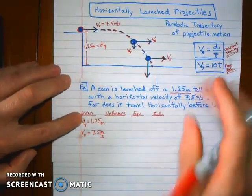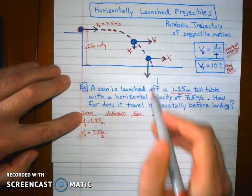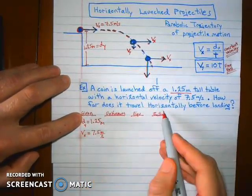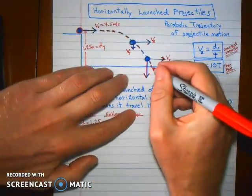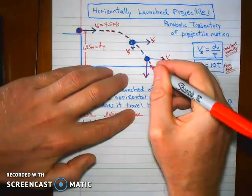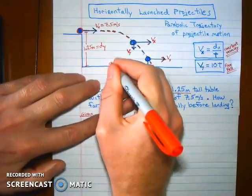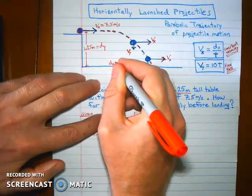We want to do some target practice. This is what we're going to be doing. Where will it land? So how far does it travel horizontally before landing? We want to figure out where is it going to land here? It's going to hit the ground somewhere over here. So that's like the distance that it's going to travel in the x direction.